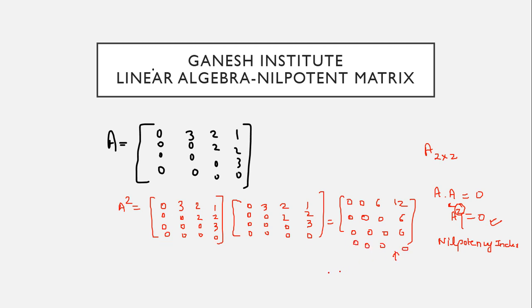But this is not a null matrix. Because the definition of nilpotency is, when you multiply the matrix by itself, it should be a null matrix. That means all the elements must be 0. But no, this is not coming up as 0. So that means 2 is not the nilpotency index. We have to multiply it by itself further. So that means A cube, A square into A.